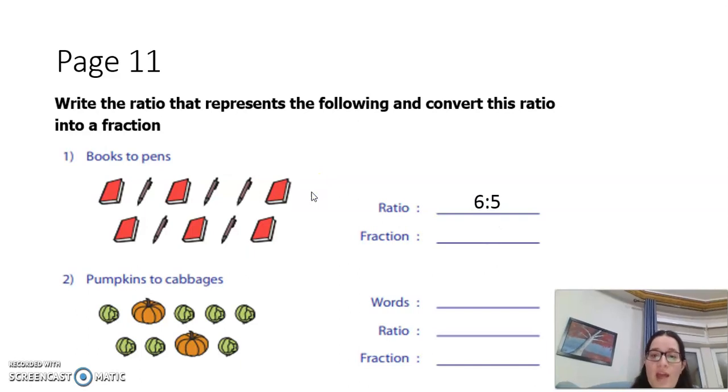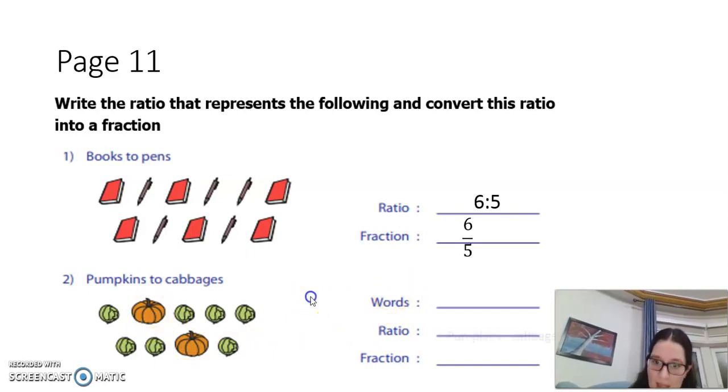Pumpkins to cabbage. First, I need to write them in words: pumpkins to cabbage. Second, I need to write the ratio of pumpkins to cabbage. How many pumpkins do I have? I have two pumpkins to cabbage: 1, 2, 3, 4, 5, 6, 7. So 2 to 7, and the fraction is 2 out of 7. Please complete the rest of the page using the same way.